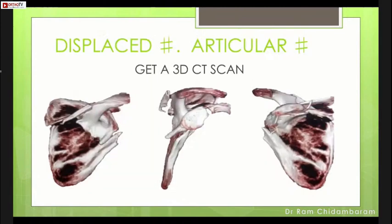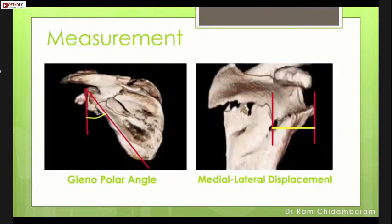If you suspect displacement of the fracture or articular involvement, obtain a 3D CT scan and subtract the humerus to visualize the glenoid fossa, because the integrity of the glenoid is very important. Measurements described include the glenopolar angle (GPA) — the angle between the plane of the glenoid and the lateral border of the scapula — and the medial-lateral displacement, compared against the opposite shoulder.